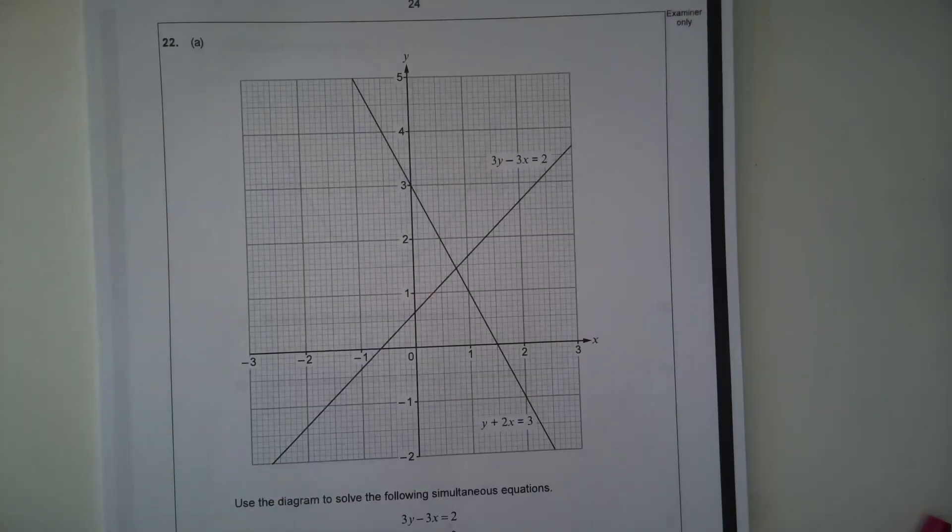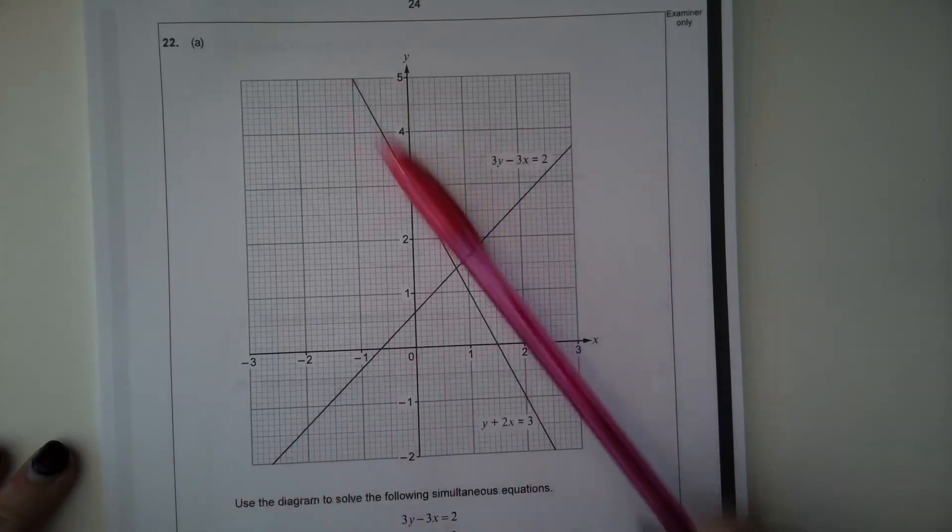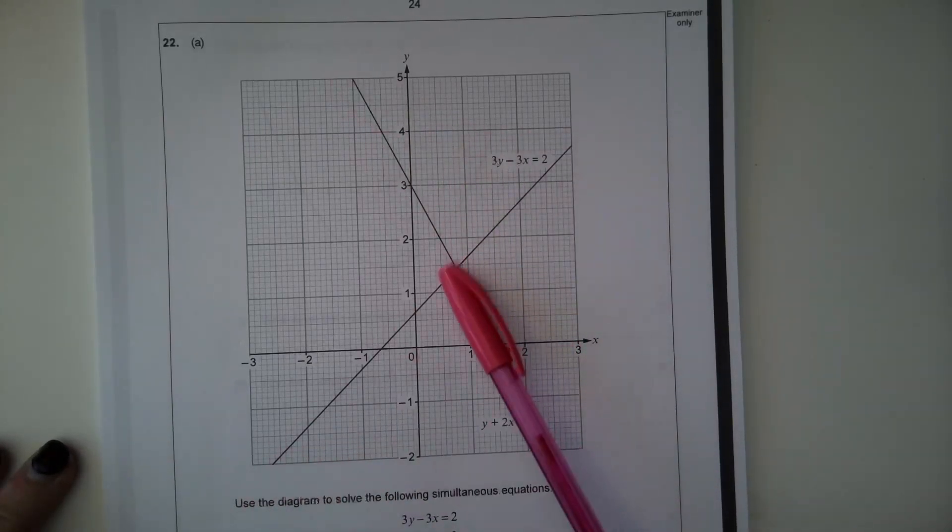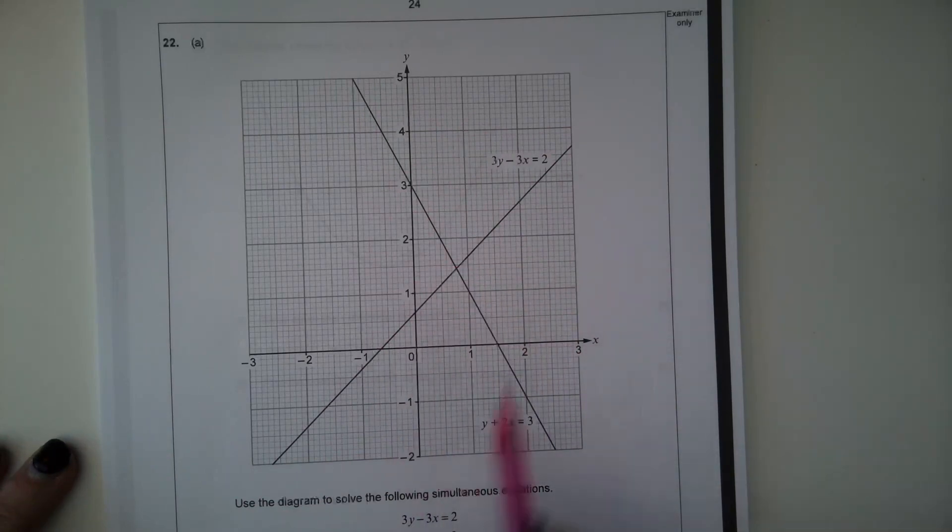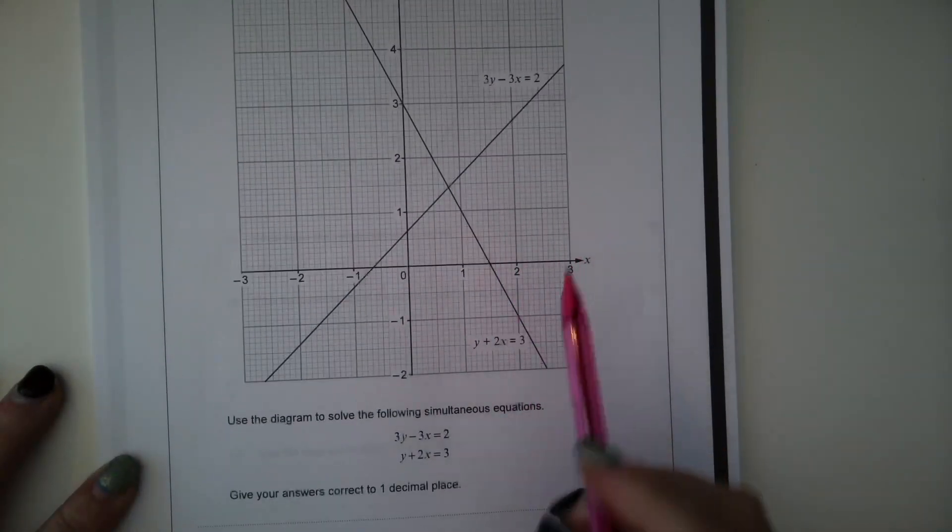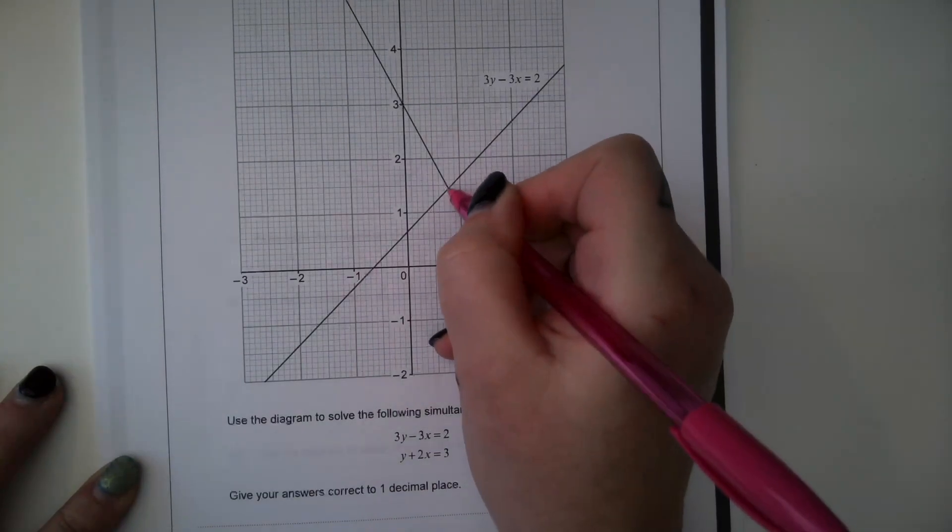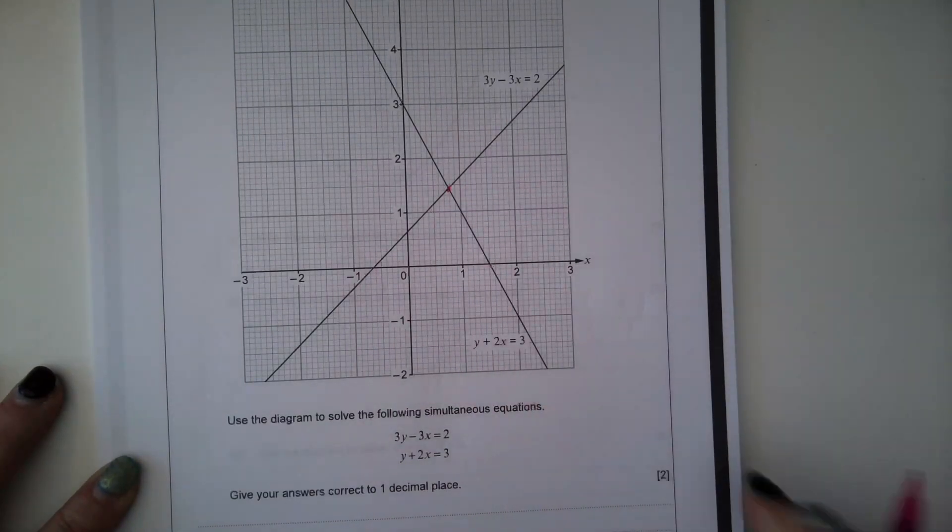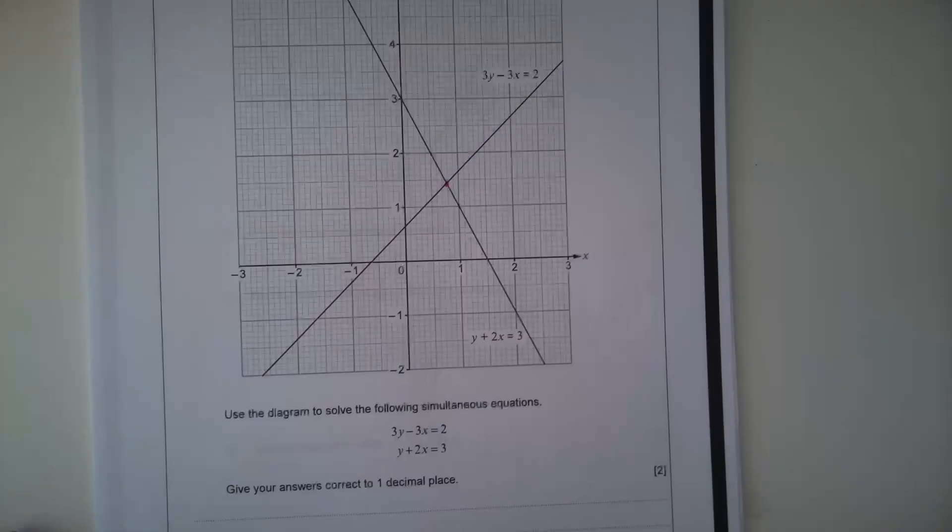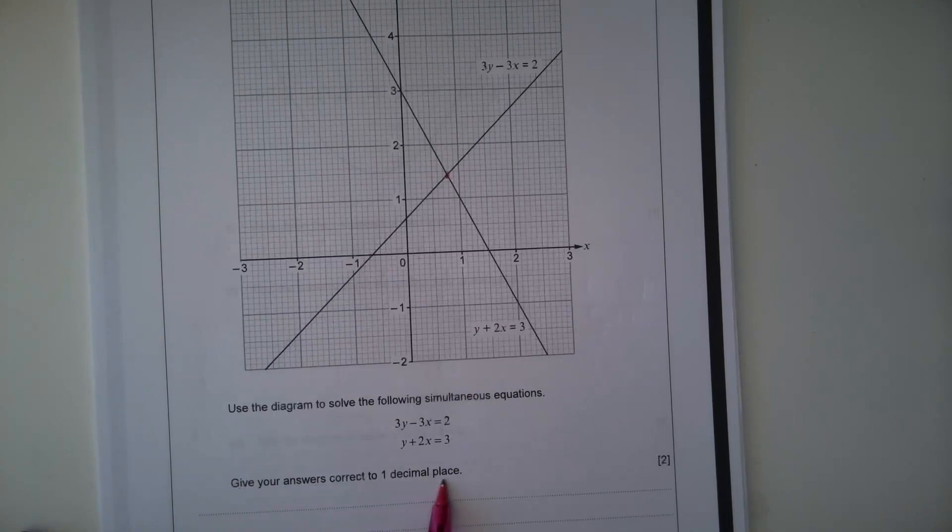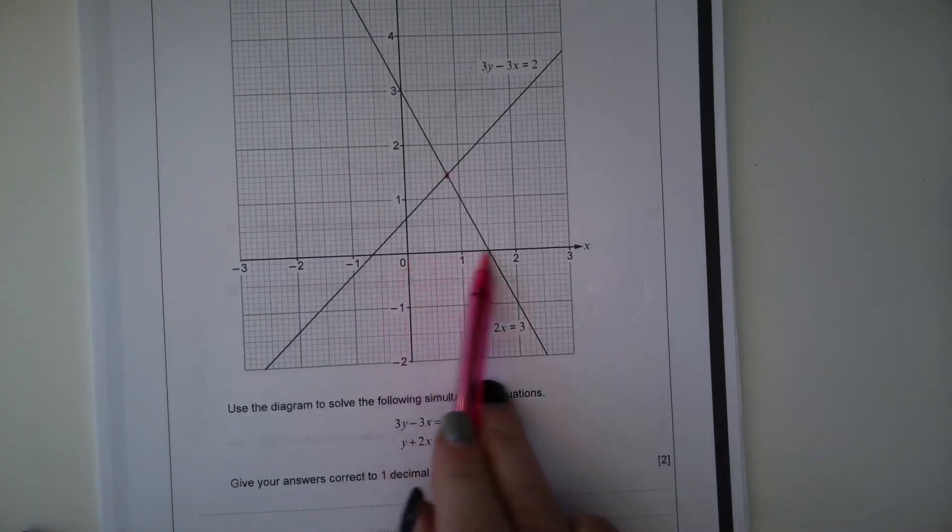22A, use the diagram to solve the following simultaneous equation. So we've got two linear graphs that intersect here. We need to use this graph to solve these simultaneous equations. So these equations here match what the lines are labelled on the graph. So the solutions are the X and Y coordinates where the two lines intersect. Now you'll see here it says give your answer correct to one decimal place.